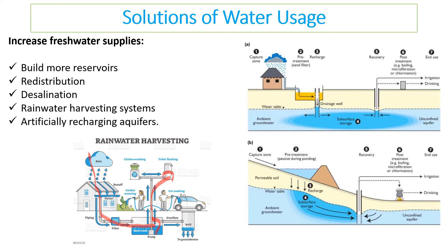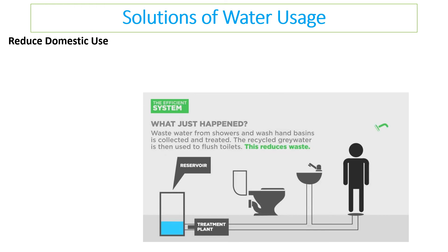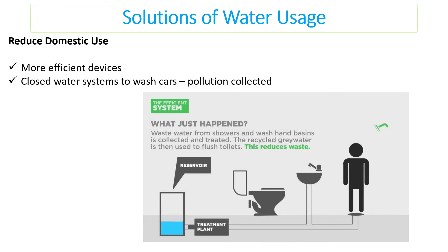We can also artificially recharge aquifers by building a reservoir above a recharge point, allowing the aquifer to be directly recharged. Domestic use can be reduced through more efficient devices such as low-flush toilets and efficient showers. Closed water systems should be used to collect pollution — for example, car washes — rather than letting runoff go straight into rivers. Gray water from our drains and washing can also be recycled for different uses.